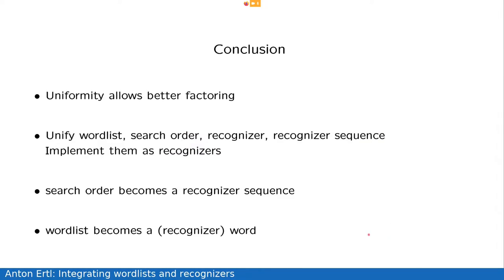So, in conclusion, uniformity allows better factoring. We can unify wordlist search order recognizers and the recognizer sequences into one thing, which are recognizers. The search order becomes a recognizer sequence. The wordlist becomes a recognizer word. And that's it. Thank you.